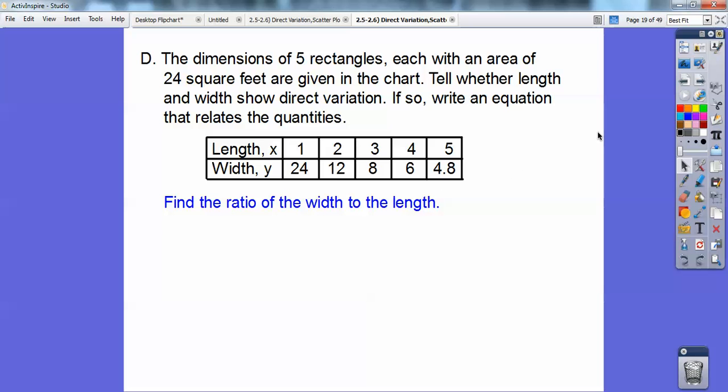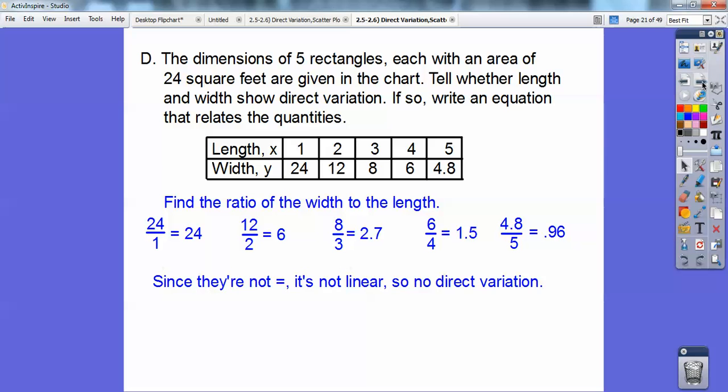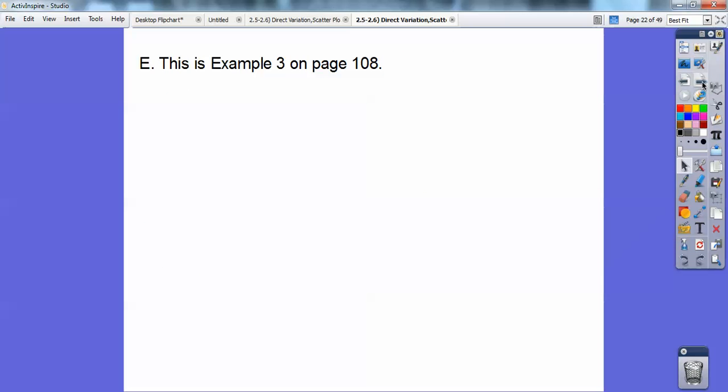Find the ratio of the length to the width. If they're all the same, then it would be a direct variation. And since this divided by this, and this divided by this, and this divided by this, since they're not all equal, then this is not a direct variation. So the answer is no, it's not direct variation on that.